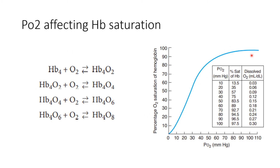Now, why does the curve have a sigmoid shape? It increases more gradually at first and then exponentially changes hemoglobin saturation. This is because hemoglobin has four heme groups. When it combines with the first oxygen molecule to form Hb₄O₂, that combination increases the affinity for the second oxygen, making it a faster process than the first. As the second oxygen binds, it increases affinity for the third, and so on. So the first oxygen combination is slower, while subsequent ones are progressively faster.